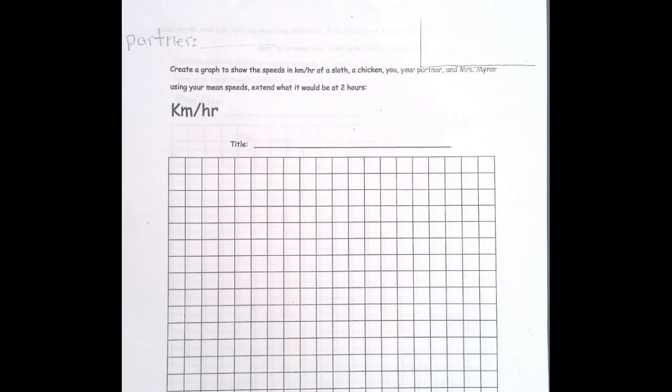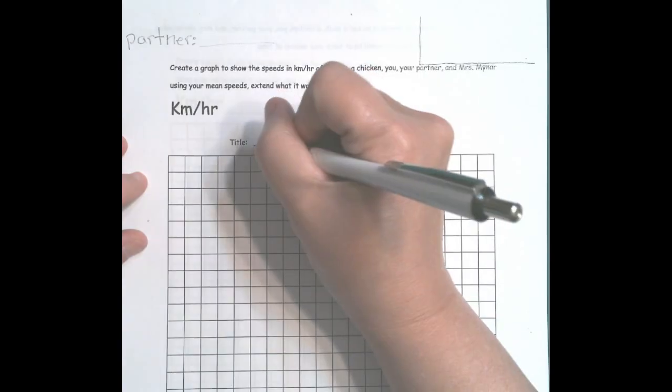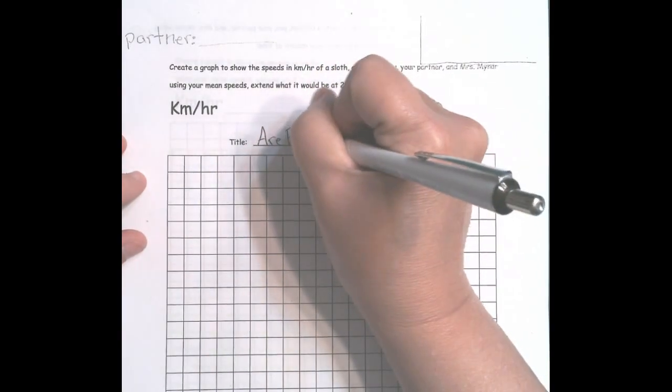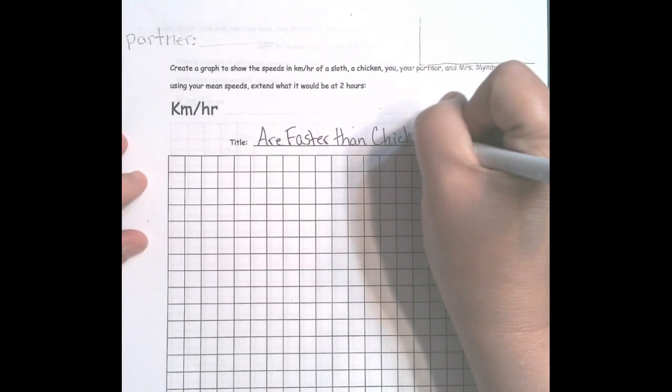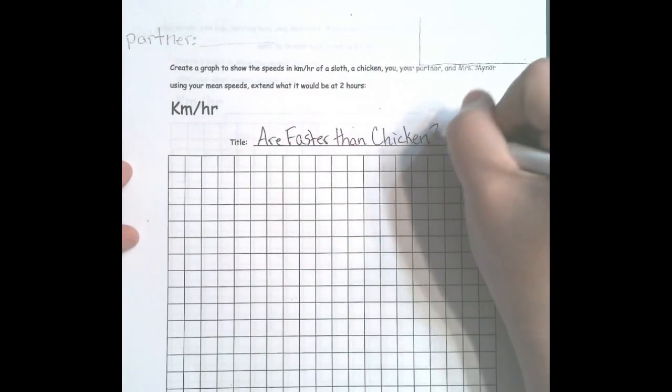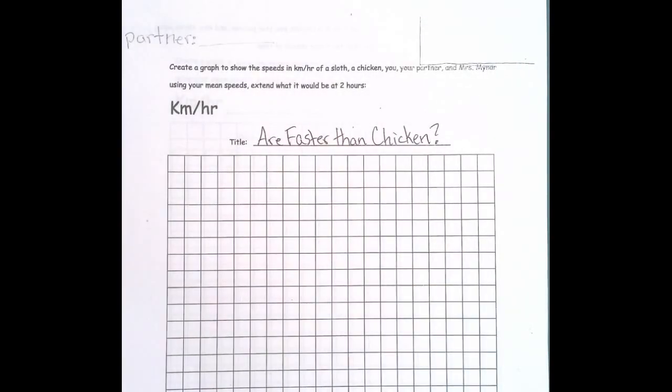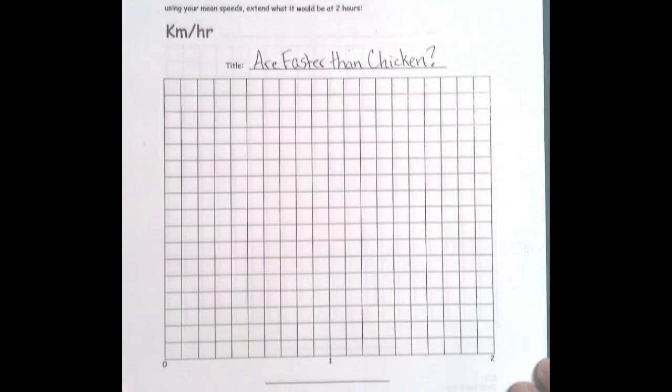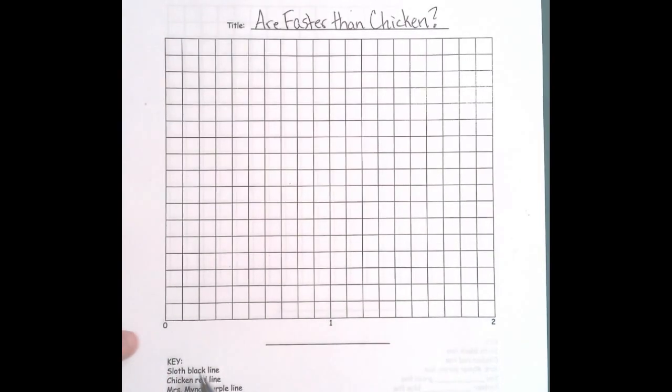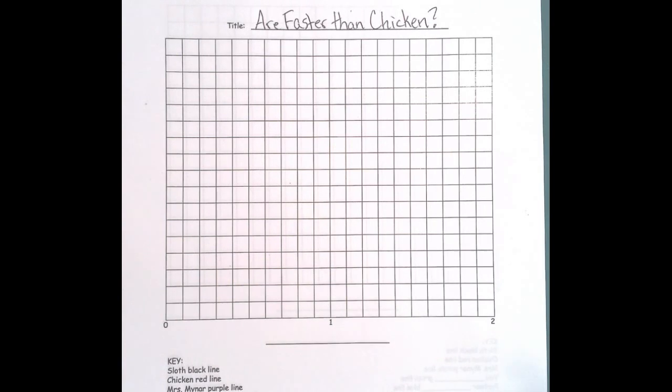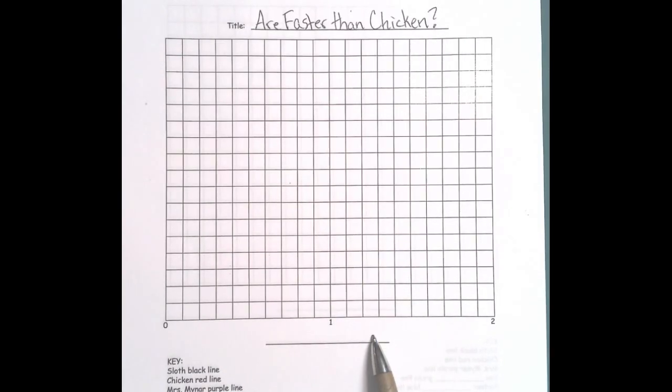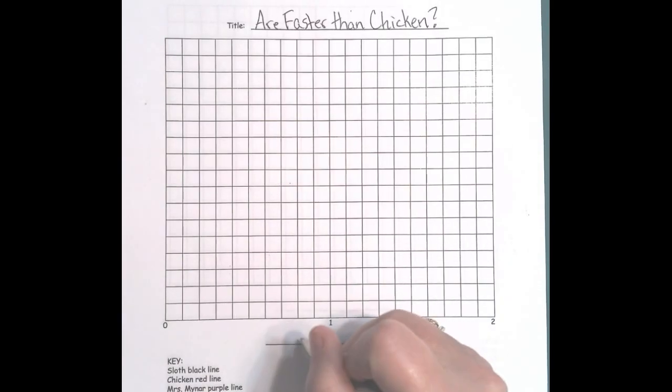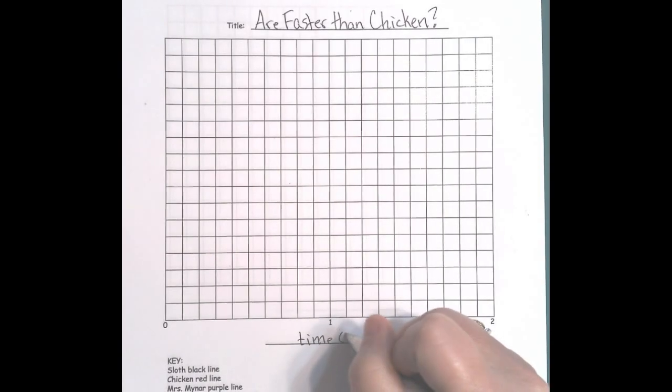The title could be 'Are You Faster Than a Chicken?' You could put 'I Am Faster,' your class name, or the x and y variables. It's kind of up to you. You have two axes - this is the x-axis. If time is one of your variables, time is always on the x-axis. You need to put what unit of time, and in this instance we're going to be using time in hours.